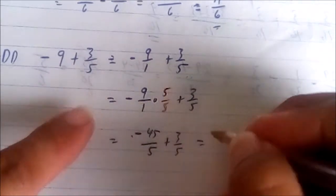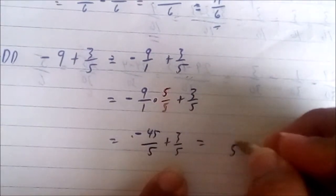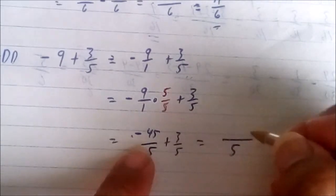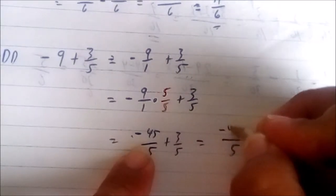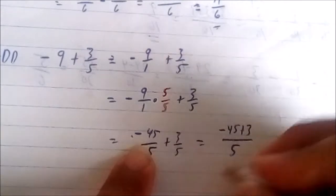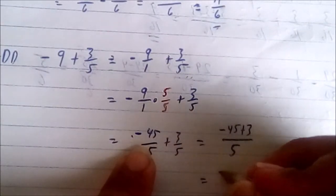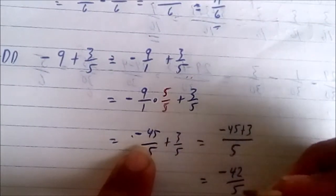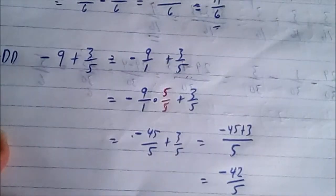Now what does the rule say? When they have like denominators you keep the like denominator and then you either add or subtract the two top values. We have negative 45 plus 3 which is a value of negative 42 over 5. Leave your answer in that form unless otherwise said to express it as a mixed number.